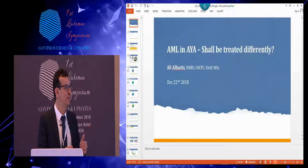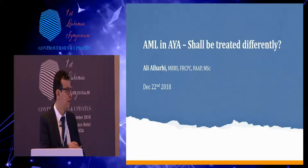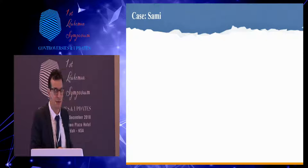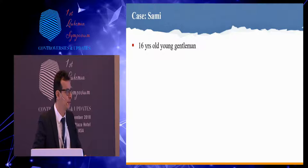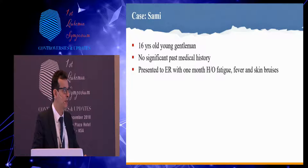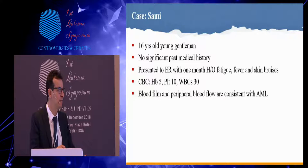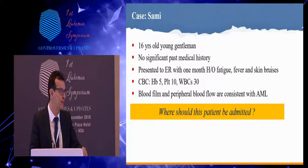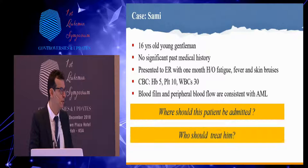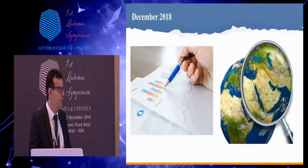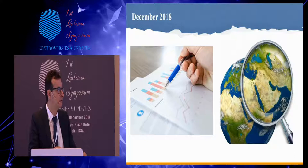Let's start with a case. Sammy is a 16-year-old gentleman who was previously healthy and presented to the ER with a one-month history of fatigue, fever, and skin bruises. His counts showed bicytopenia and high WBCs, and the blood film and blood flow showed a diagnosis of AML. The question that came up is: should this patient be admitted to the adult floor or the pediatric floor, and who should treat him?